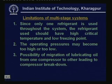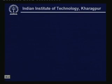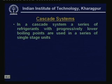Another type of system is the cascade refrigeration system. In a cascade system, a series of refrigerants with progressively lower boiling points are used in a series of single-stage units. These different single-stage systems use different refrigerants which are never physically mixed — the only connection between different stages is through thermal contact. The low-temperature system transfers heat to the high-temperature system and so on.